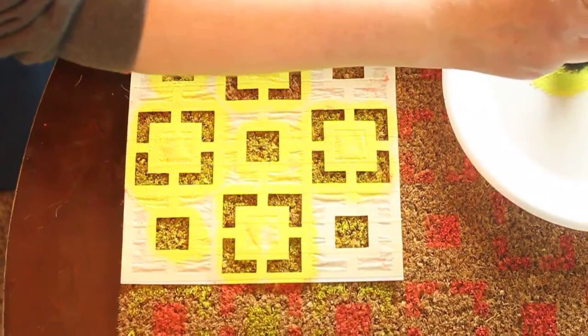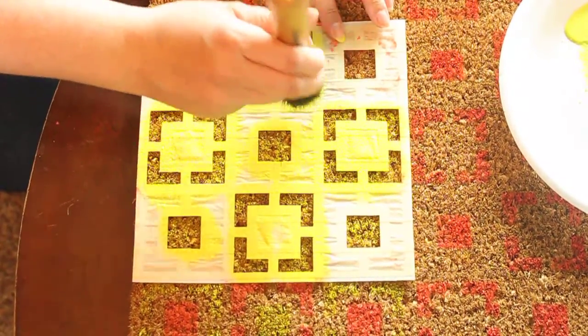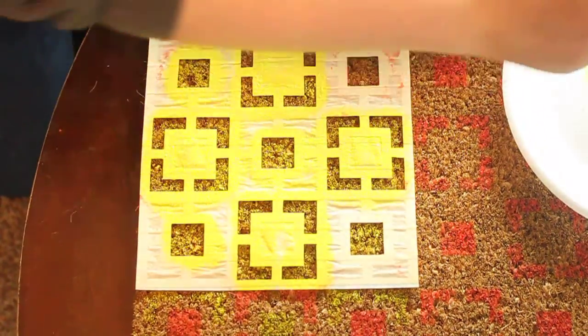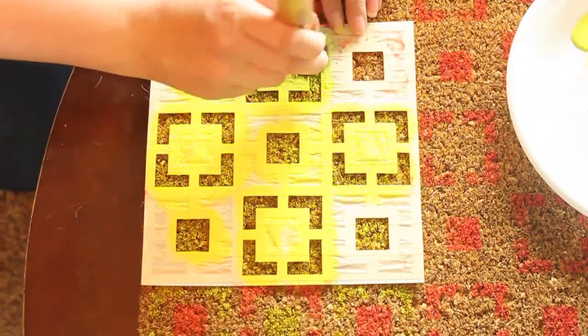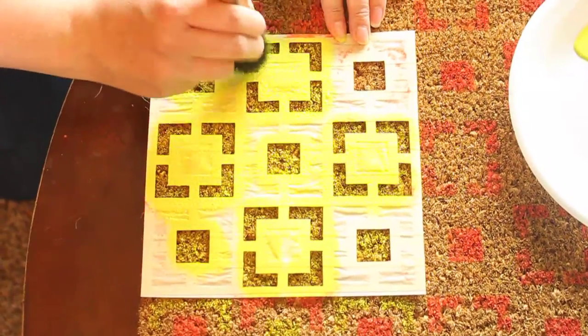When you stencil, you want to tap. If you actually brushed the paint on, you would get the paint underneath the stencil, so you wouldn't get that nice crisp line and your images would run together.